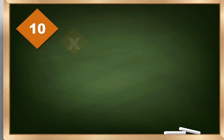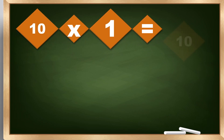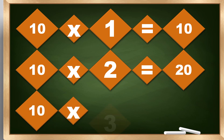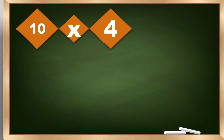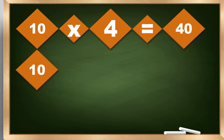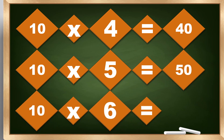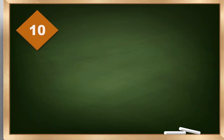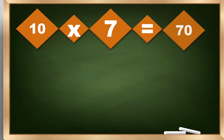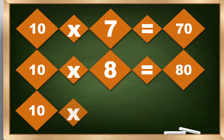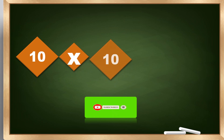Multiplying by 10. 10 times 1 equals 10. 10 times 2 equals 20. 10 times 3 equals 30. 10 times 4 equals 40. 10 times 5 equals 50. 10 times 6 equals 60. 10 times 7 equals 70. 10 times 8 equals 80. 10 times 9 equals 90. 10 times 10 equals 100.